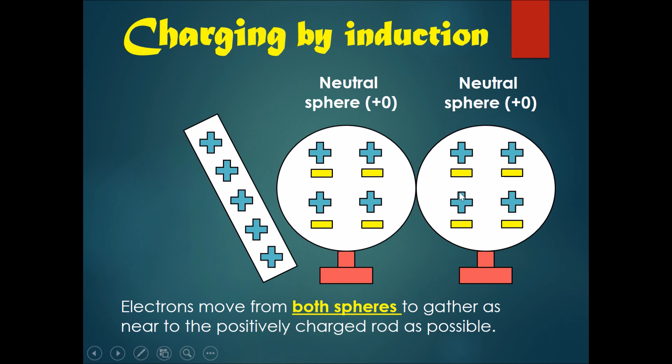They'll move from both spheres because both spheres are in contact, so electrons can travel through the point of contact. Then they will gather as near to the positively charged rod as possible, since electrons are attracted to positive charge.